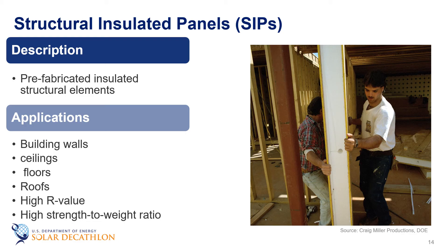Structural Insulated Panels, or SIPs, are prefabricated insulated structural elements for use in building walls, ceilings, floors, and roofs. When installed properly, SIPs result in a more airtight dwelling, which makes a building quieter and more comfortable than a conventional building. SIPs are available with different insulating materials, usually polystyrene or polyisocyanurate foam. SIPs not only have high R-values, but also have a high strength-to-weight ratio. A SIP typically consists of a 4 to 8 inch thick foam board insulation sandwiched between two sheets of oriented strand board or other structural facing materials. Manufacturers can customize the exterior and interior sheathing materials, and the facing is glued to the foam core, then either pressed or placed in a vacuum to bond the sheathing and core together.